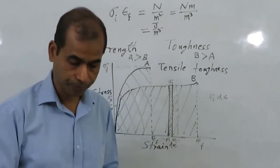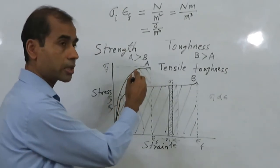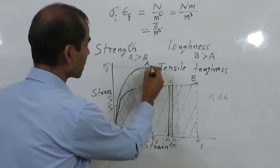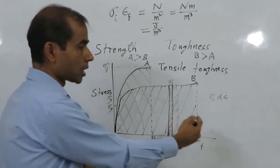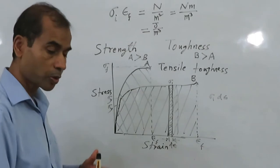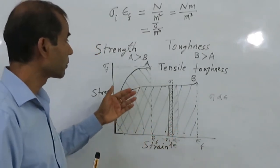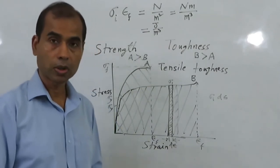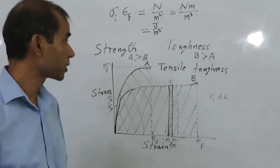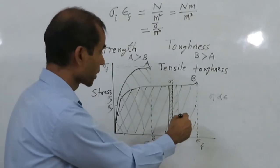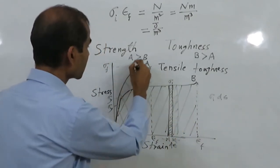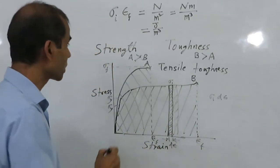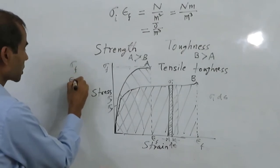It has been found that high-strength materials tend to have lower toughness — they tend to fracture at strains much lower than low-strength materials. However, it also depends on the material itself. Ceramic materials, for example, are very low toughness materials, whereas most metals are very high toughness materials. To maximize the area under the stress-strain curve, both the fracture stress and fracture strain should be high — meaning high strength and high ductility are both required for high toughness.